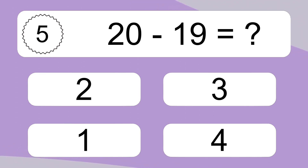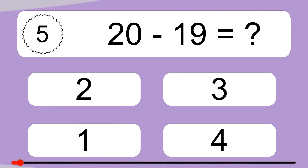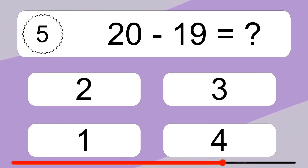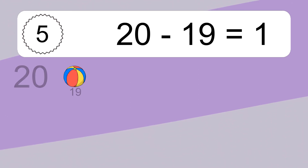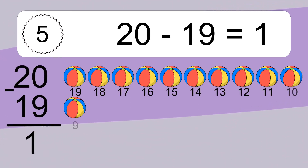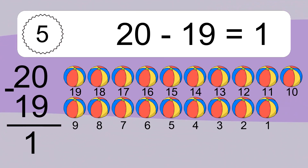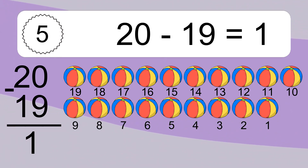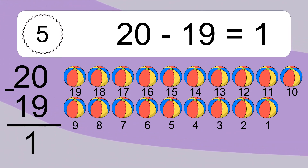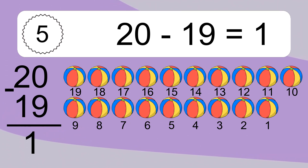20 minus 19 equals what? 20 minus 19 equals 1. Let's count it: 19, 18, 17, 16, 15, 14, 13, 12, 11, 10, 9, 8, 7, 6, 5.